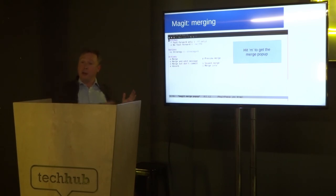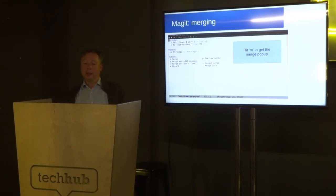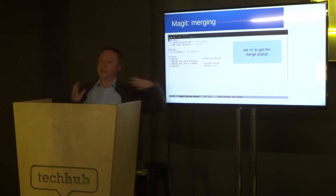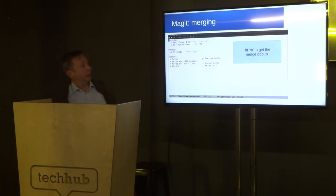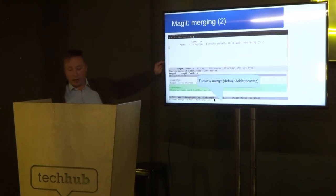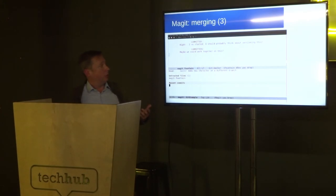Merging. I've done my new branch and in the background I've gone and added something to the file. I use Magit status, then press M to get the merge popup. I should mention that all of this can be key-bound if you have a particular favourite command you use all the time. I just previewed it — I've added a line. Then I hit merge and it's done.